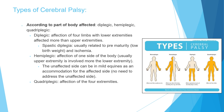Cerebral palsy is also classified by parts of the body affected: diaplegic, hemiplegic, and quadriplegic. In diaplegic cerebral palsy all four limbs are affected, but the lower extremity much more than the upper. Spastic diplegia is one of the most common forms, and it is usually related to prematurity and low birth weight.